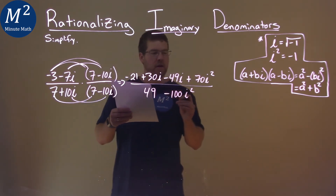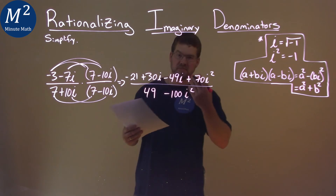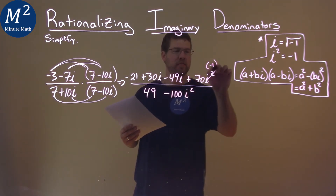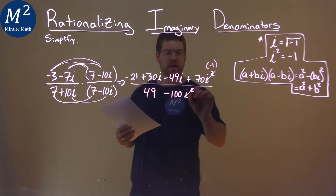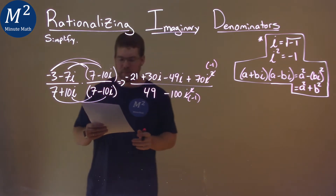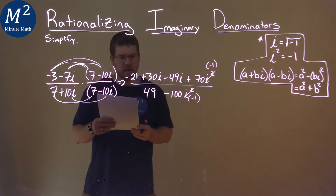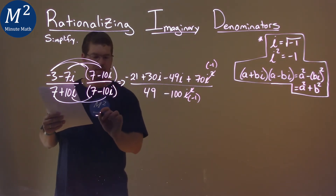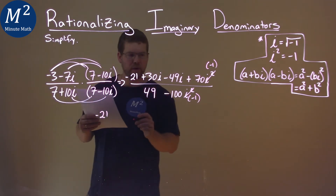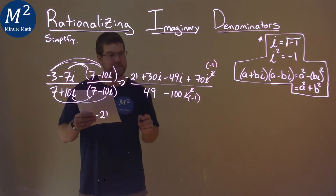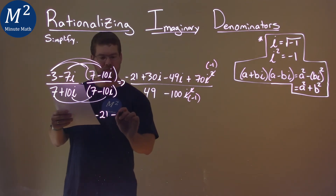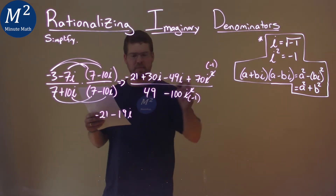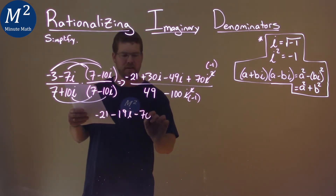So, what do we know about i squared? It's negative 1. So instead of that i squared, let's put a negative 1 in. This i squared becomes negative 1. So let's go rewrite our numerator and combine what we can. Negative 21, and then 30i minus 49i is minus 19i. And then 70 times negative 1 is minus 70.